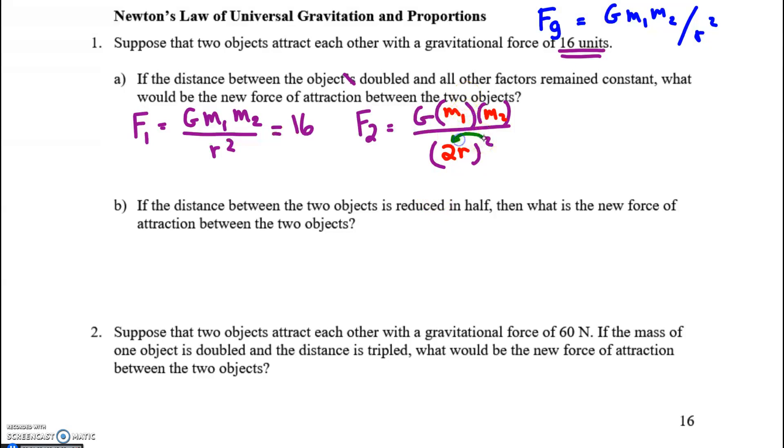We have to distribute the squaring to both things in the parentheses, and when we do, we get G M1 M2 over 4 times R squared, but I could break the 4 out as its own fraction. I just have to keep it in the denominator. G M1 M2 over R squared, and look at this. That's the original mass, the original M2, and the original R, times G.